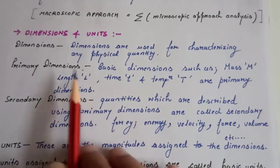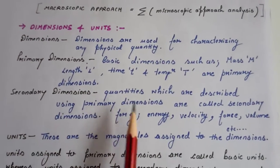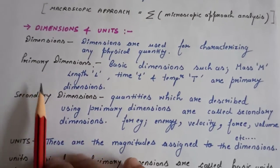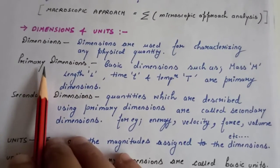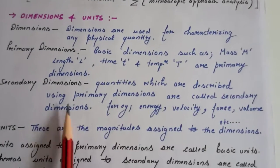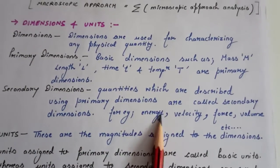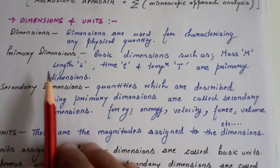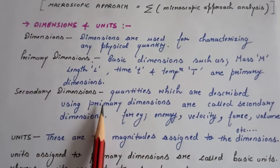Secondary dimensions are those which are described using primary dimensions. Then they are called secondary dimensions, such as energy, velocity, force, or volume. For these dimensions we need primary dimensions, that's why we call them secondary dimensions.